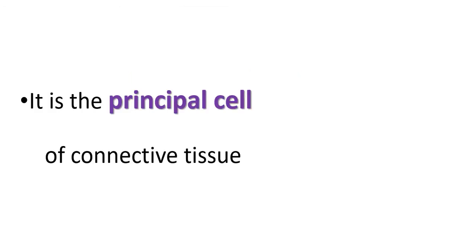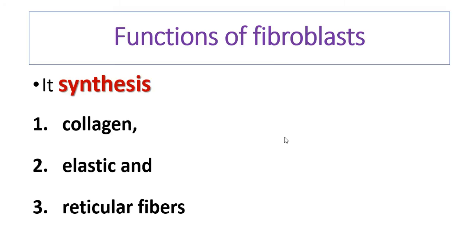Fibroblast is the principal cell of the connective tissue. There are some other cells of the connective tissue, but this is the principal cell. The function of the fibroblast is to synthesize fibers — as reflected in the name 'fibroblast' — so it produces fibers of the connective tissue.